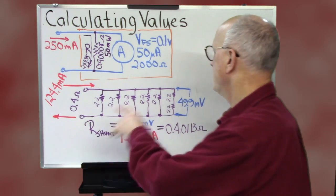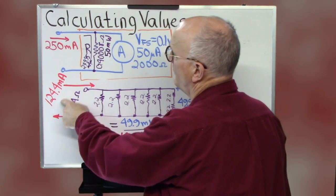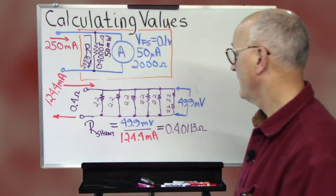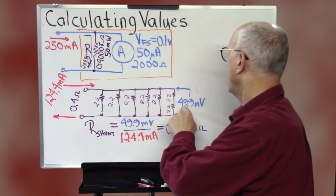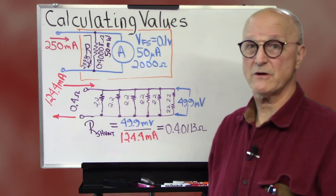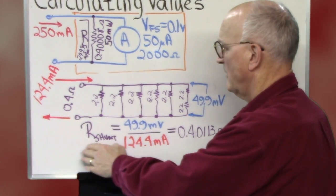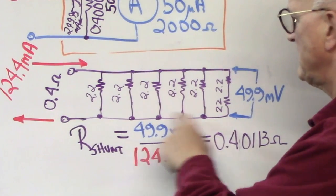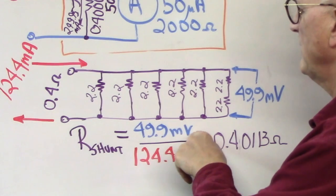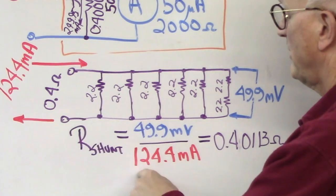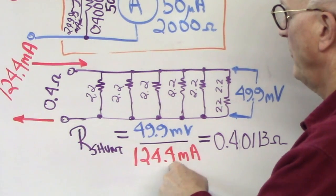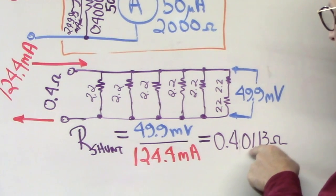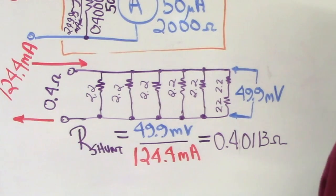With these two values, we now can calculate the actual value of our shunt resistor. So, on the bench, we measured 124.4 milliamps flowing through our shunt resistor here. And we measured 49.9 millivolts across the shunt resistor. So, calculating the shunt resistance value, we just take this value here, the 49.9 millivolts. We divide it by the current through it, 124.4 milliamps. And we get 0.40113 ohms.